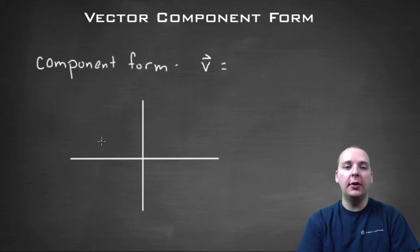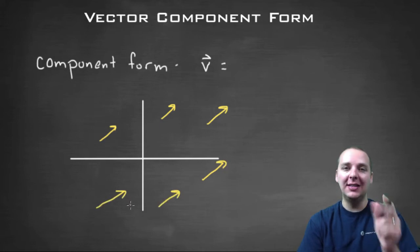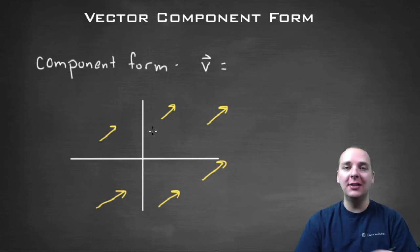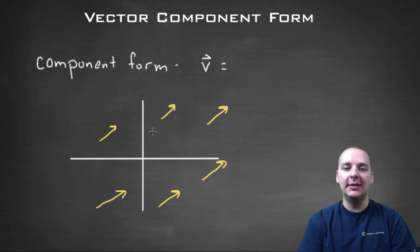As you probably already know, vectors actually represent an infinite number of line segments. So as long as these guys have the same direction and the same magnitude, which means the same length, all these guys are considered to be the same vector. It doesn't really matter where you draw it, if it has the same direction and magnitude.